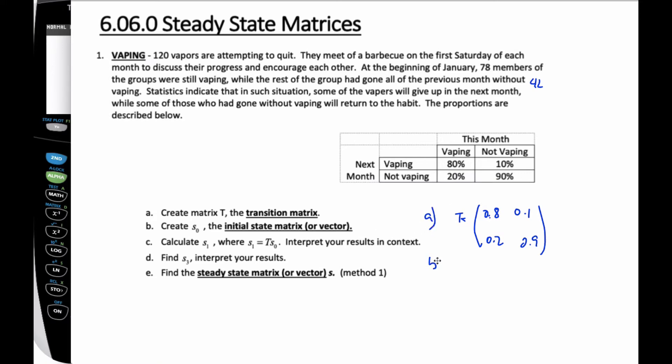The B part now is simply saying S sub 0 is called the initial state matrix, or the initial state vector. And so these are definitions that are all bold here. This is the transition, initial state matrix is the initial state where it's starting at, and that's starting this scenario has 78 vapers, members who are vaping still, and 42 who are not, out of the total of 120.